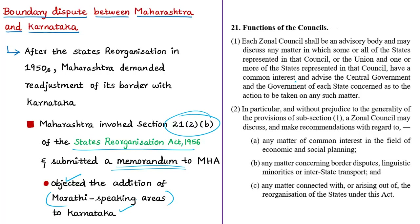The States Reorganisation Act of 1956 also established five Zonal Councils for five zones of India. Maharashtra falls under the Western Zone and Karnataka under the Southern Zone. One important function of a Zonal Council is that it may discuss and make recommendations regarding border disputes. Maharashtra invoked this provision to ensure its border concerns are discussed in the Zonal Councils.